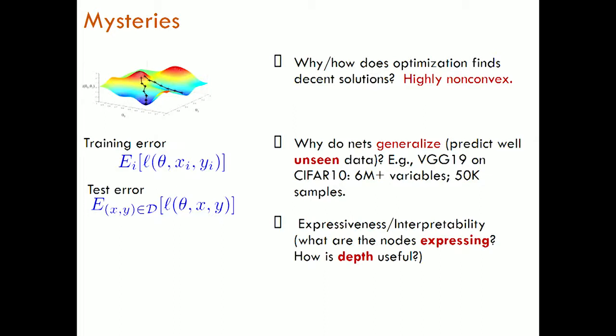This seems to overturn a lot of classical insights from statistical theory that you should avoid having too many variables in your model. Generalization error is the difference between the test error and the training error — the test error is on the full distribution and training error is on the training data. Training error usually goes to zero in neural networks. Another mystery is expressiveness and interpretability: what are the nodes expressing? It's just one big black box. And how is depth useful? In the past, people used networks with just a couple of layers; these days there are hundreds or even thousands of layers.